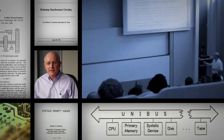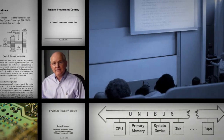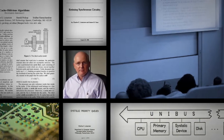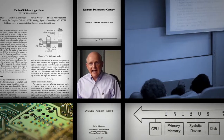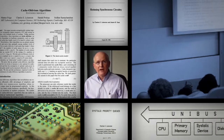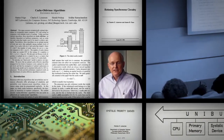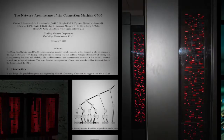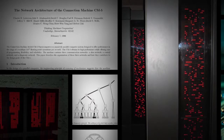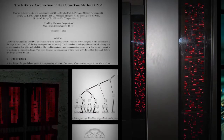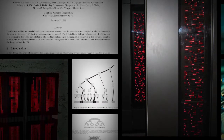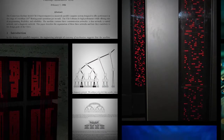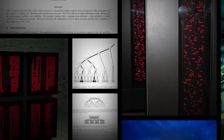He co-authored the first paper on systolic architectures, invented the retiming method of digital circuit optimization, and introduced the notion of cache-oblivious algorithms. At Thinking Machines, he designed and led the implementation of the network architecture for the Connection Machine model CM5 supercomputer.